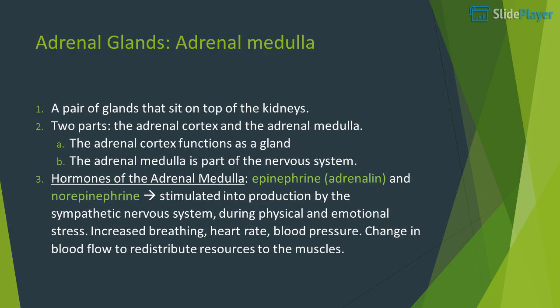Adrenal glands: a pair of glands that sit on top of the kidneys, with two parts — the adrenal cortex and the adrenal medulla. The adrenal cortex functions as a gland; the adrenal medulla is part of the nervous system. Hormones of the adrenal medulla: epinephrine (adrenaline) and norepinephrine, stimulated into production by the sympathetic nervous system during physical and emotional stress. Effects include increased breathing, heart rate, and blood pressure, and changes in blood flow to redistribute resources to the muscles.